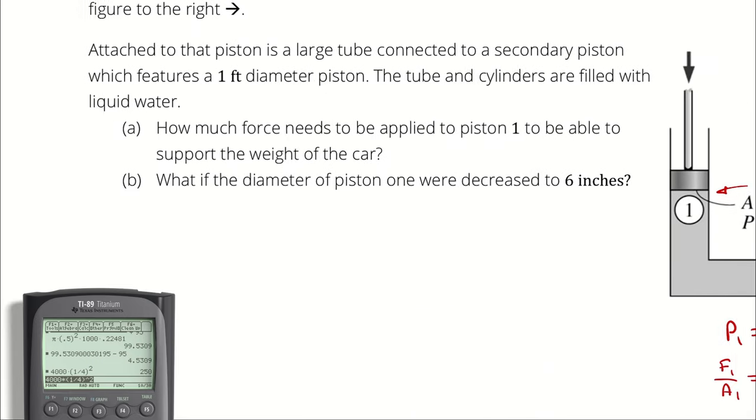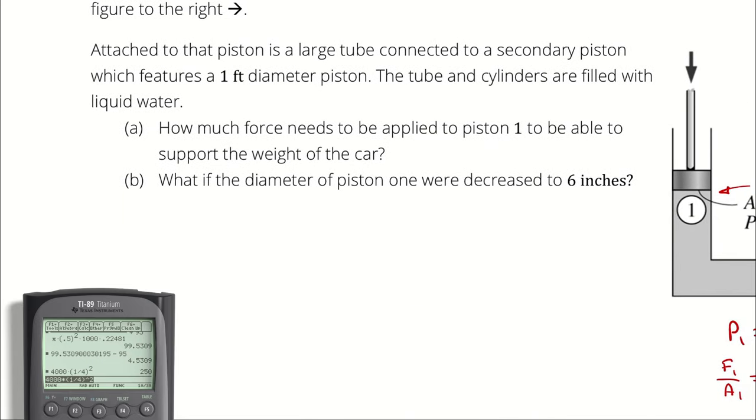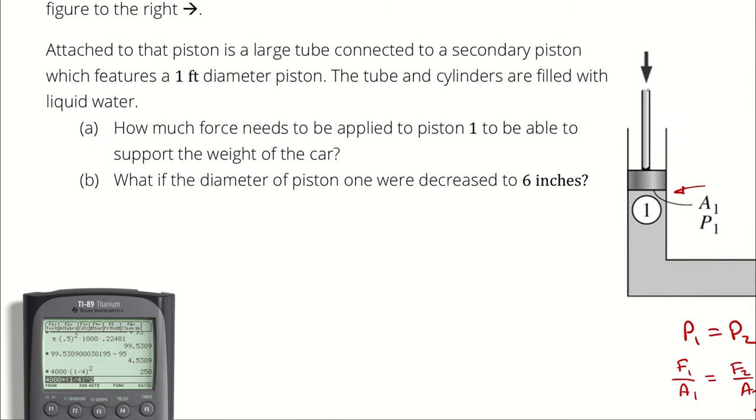In part B, the diameter of the piston at state 1 is decreased to 6 inches instead of 12 inches. How does that affect our answer? Would it have it or something else?